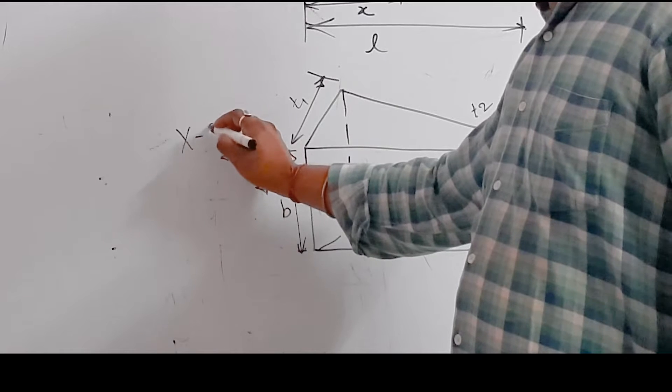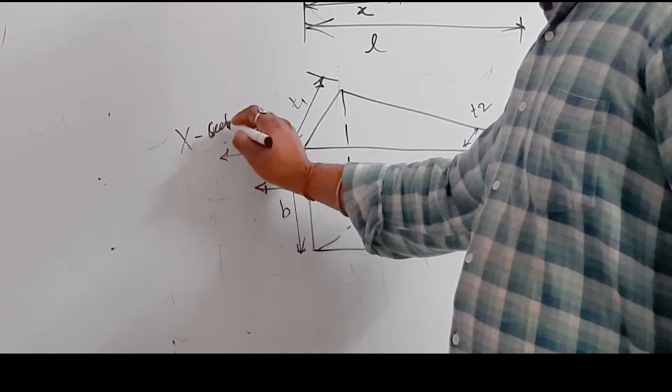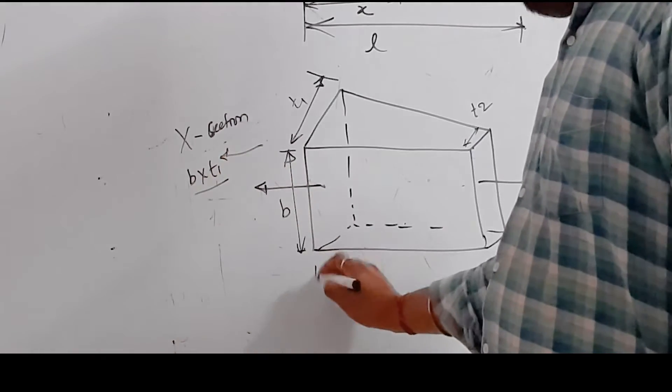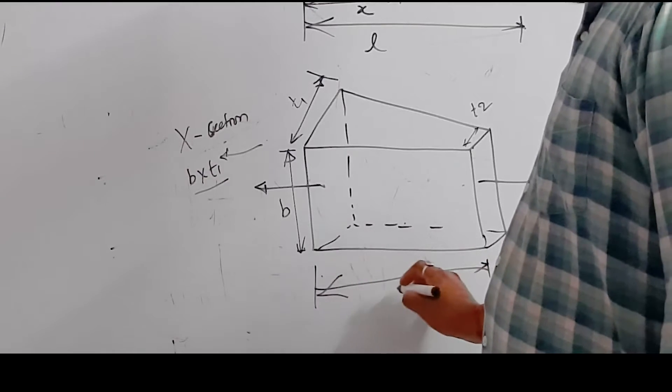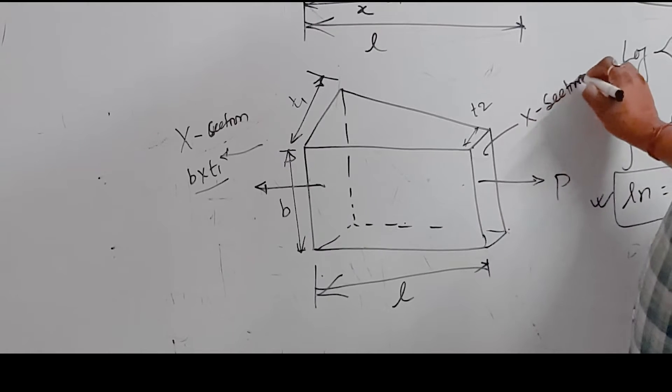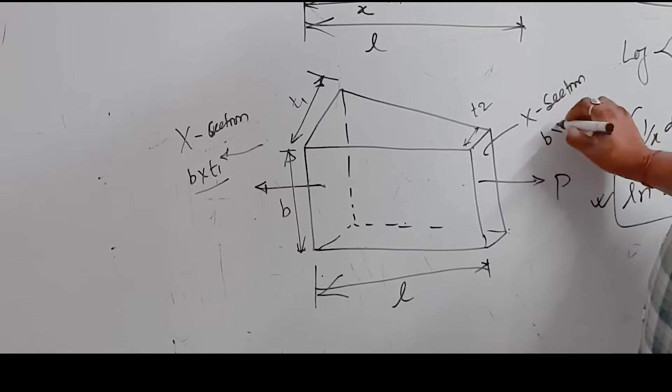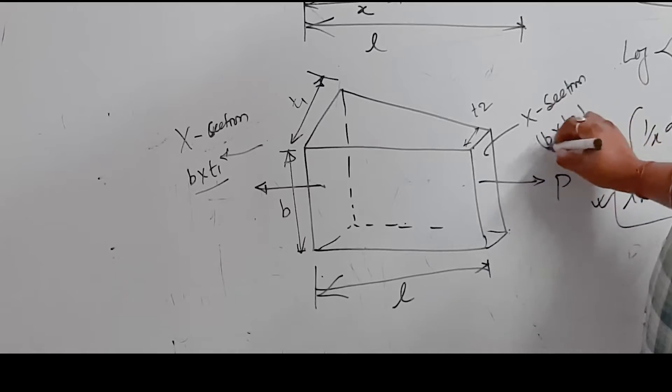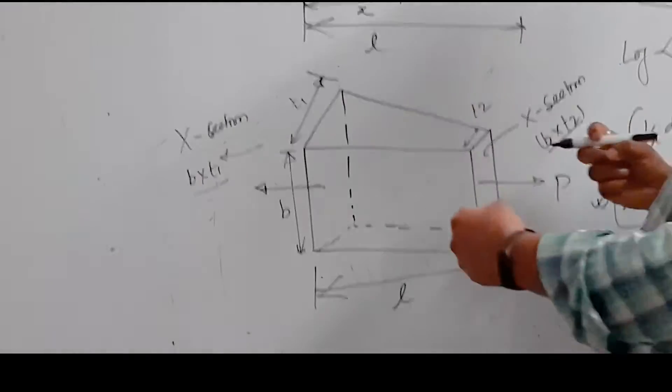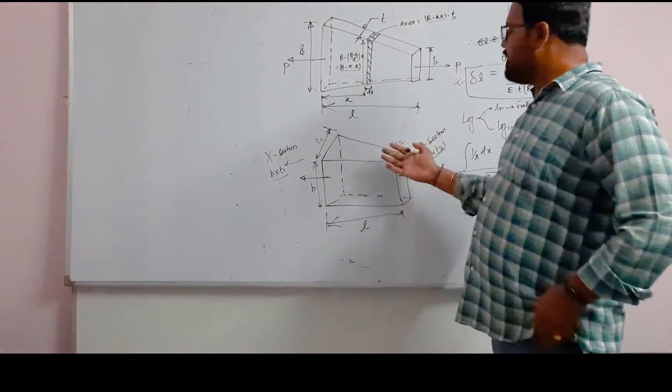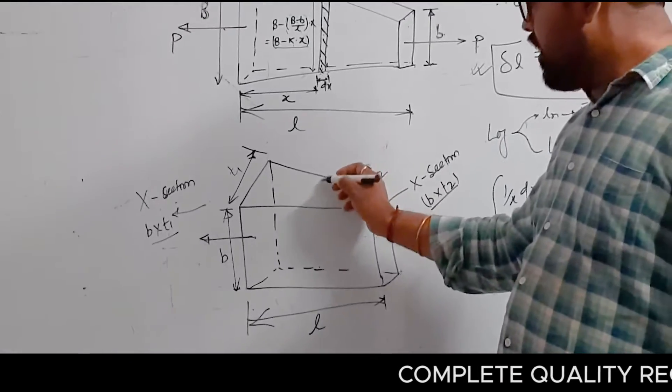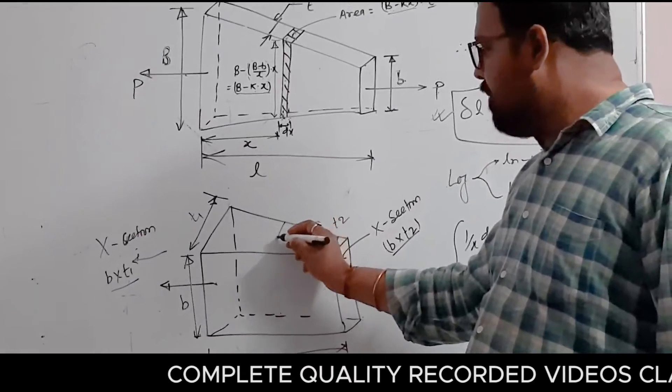Here the cross-section is B into T1. And after L length, the cross-section is B into T2. So it's clear that thickness is tapered. If you want the deformations, you can use this for self-practice. It's very similar - you assume an elemental strip.